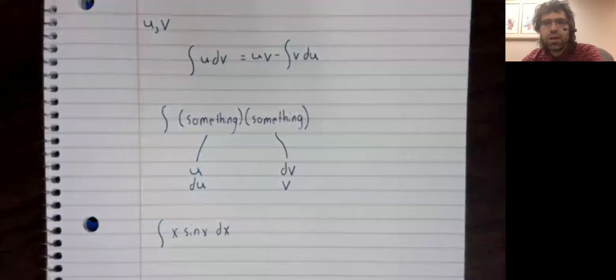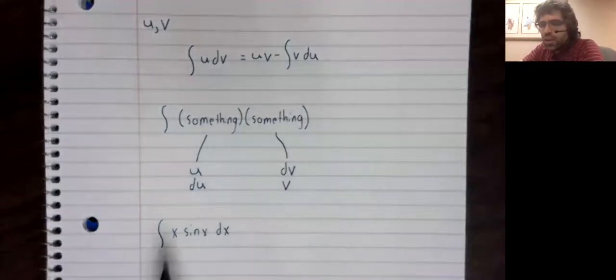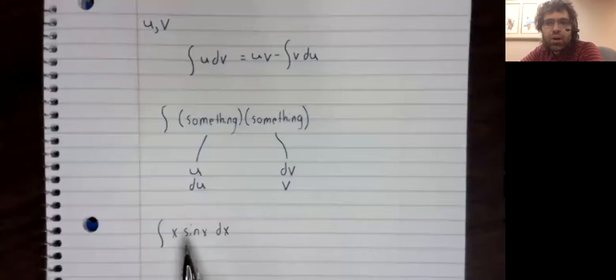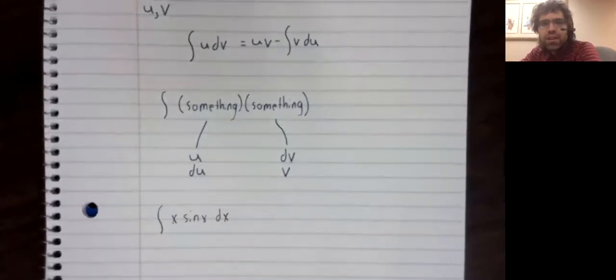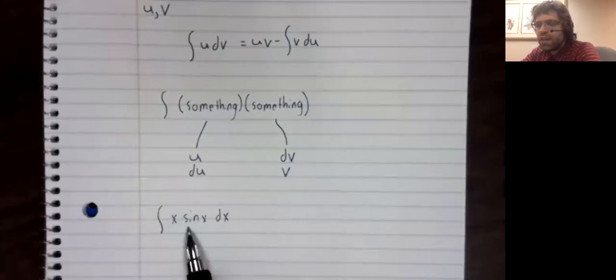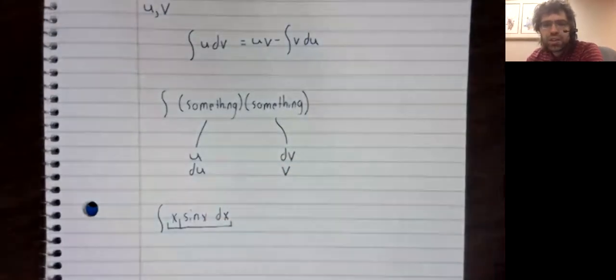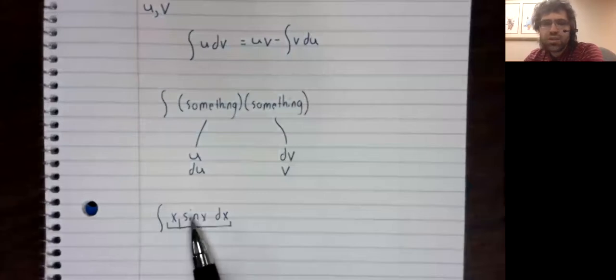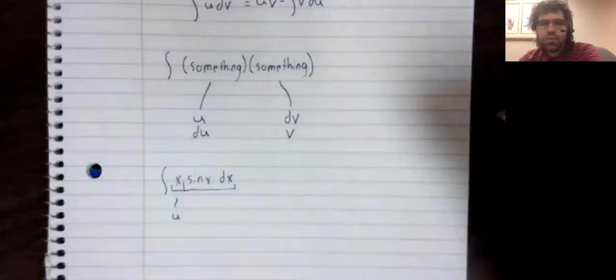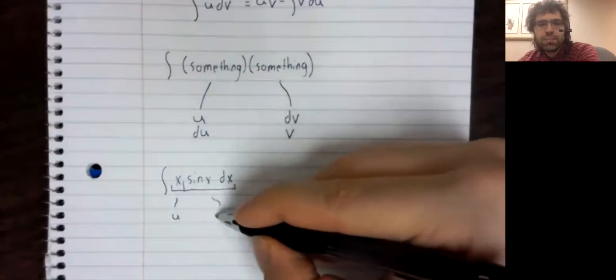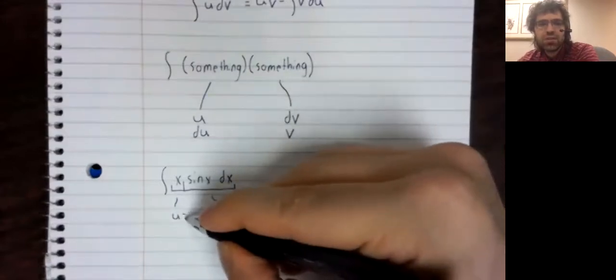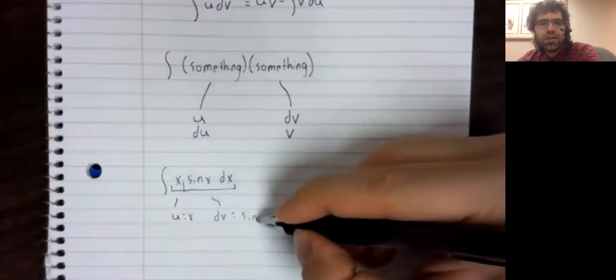This is something where I think you really need to see an example for it to be clear. So let's pick one of the classic examples. This integral shows up a lot in applications. It's one of the reasons that integration by parts is so important. The integral of X times the sine of X dX. And we'll break this integral into two pieces. We've got the X times the sine of X. And we'll call one of those pieces U. And the other piece we call dV.